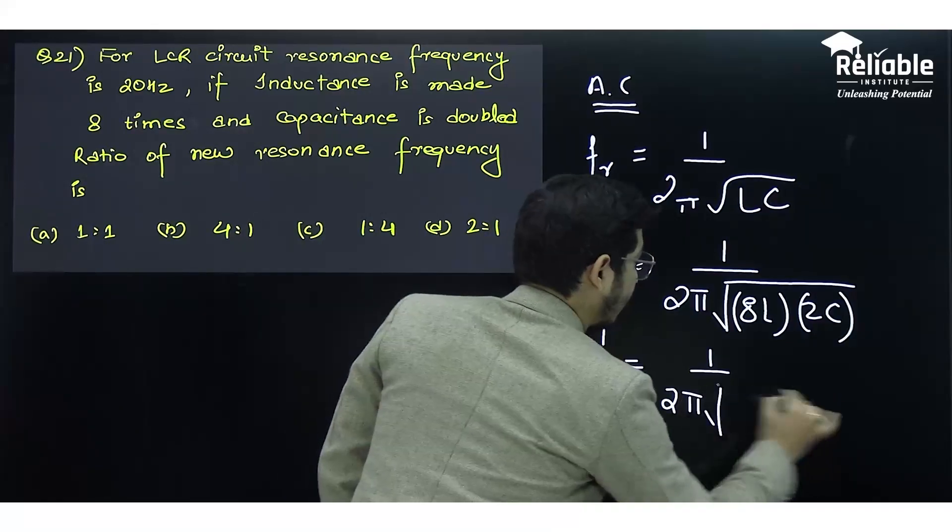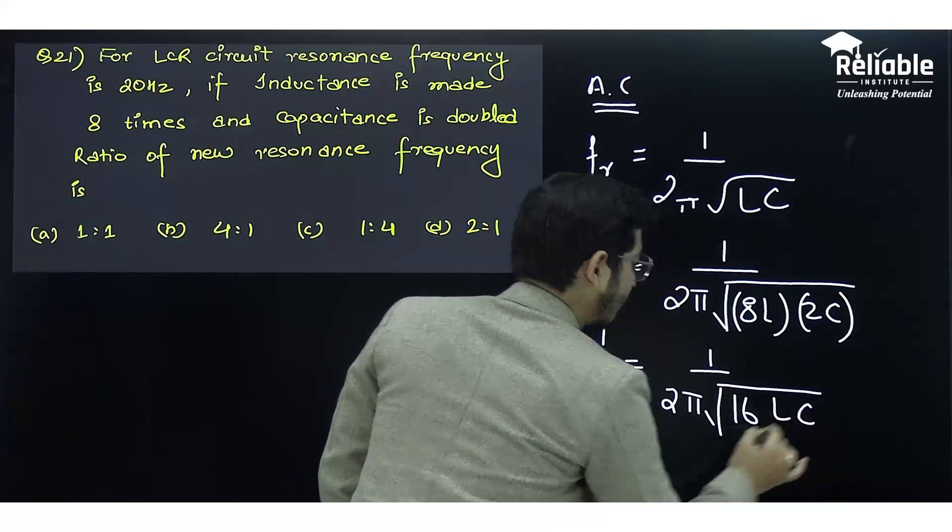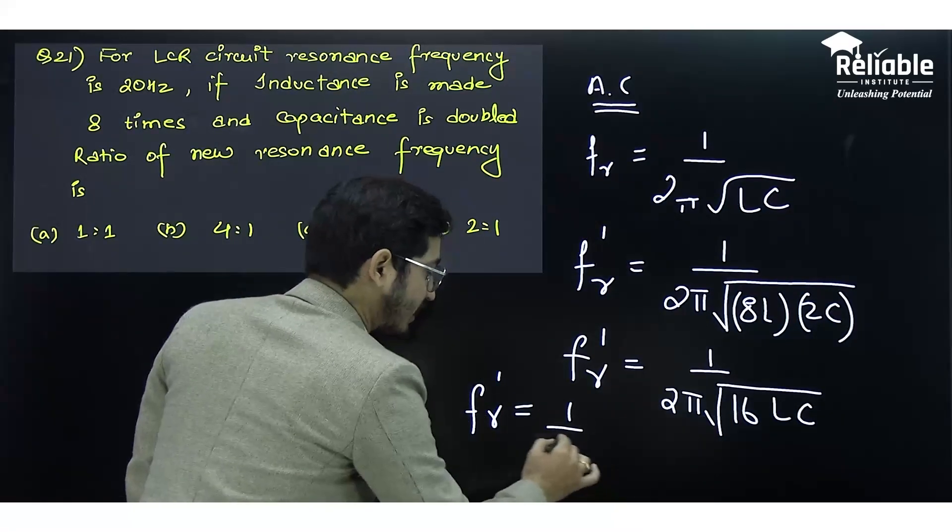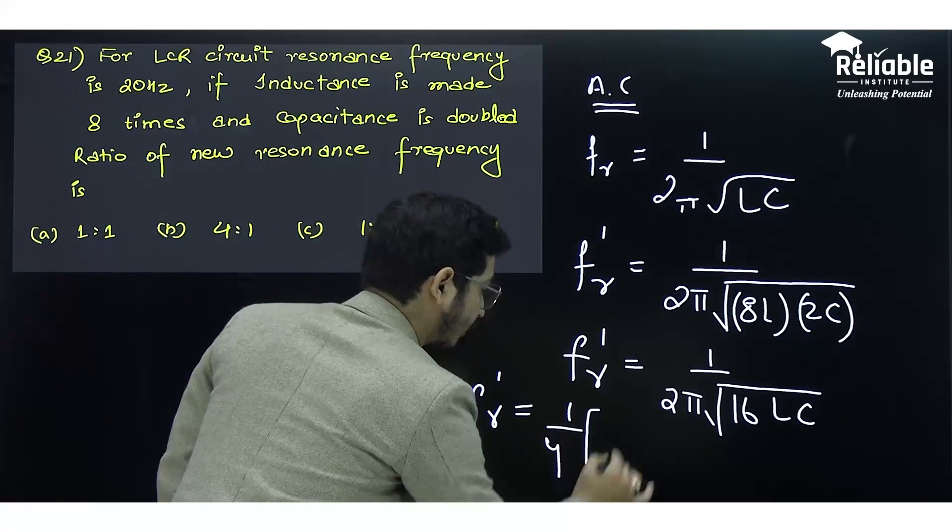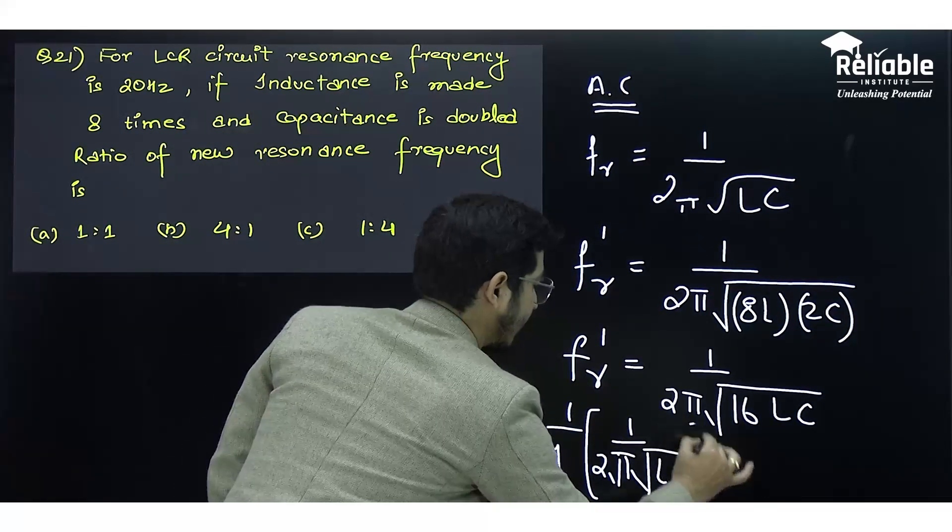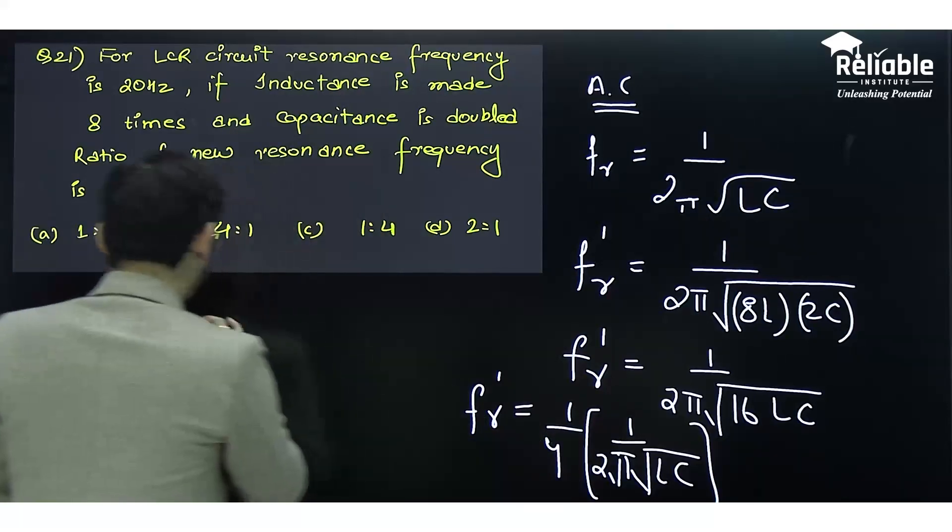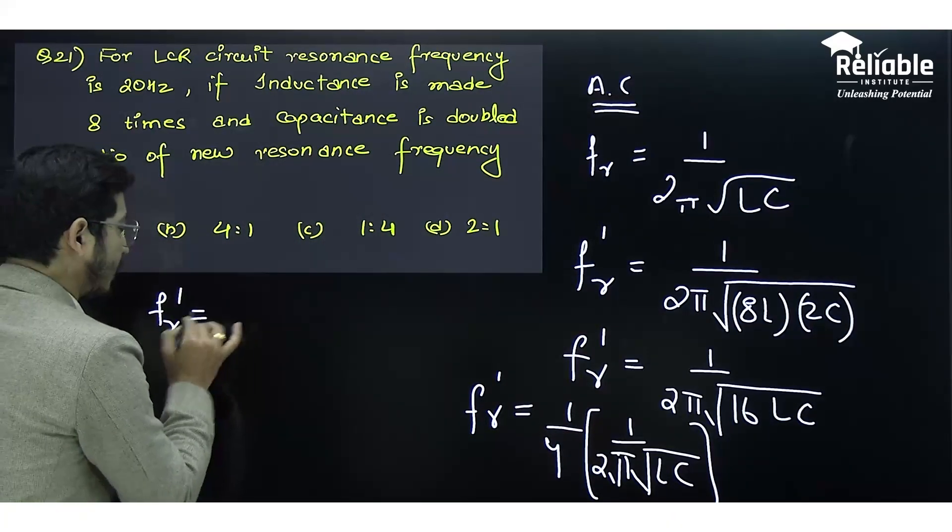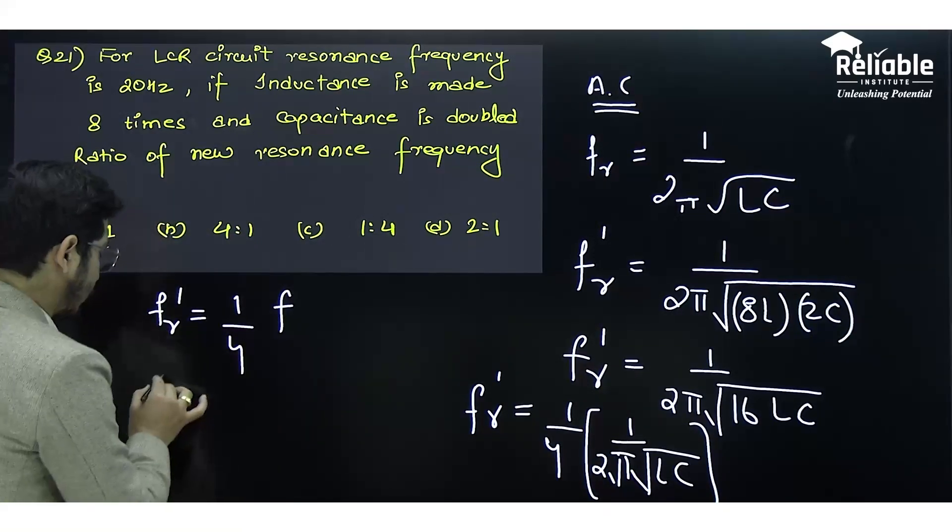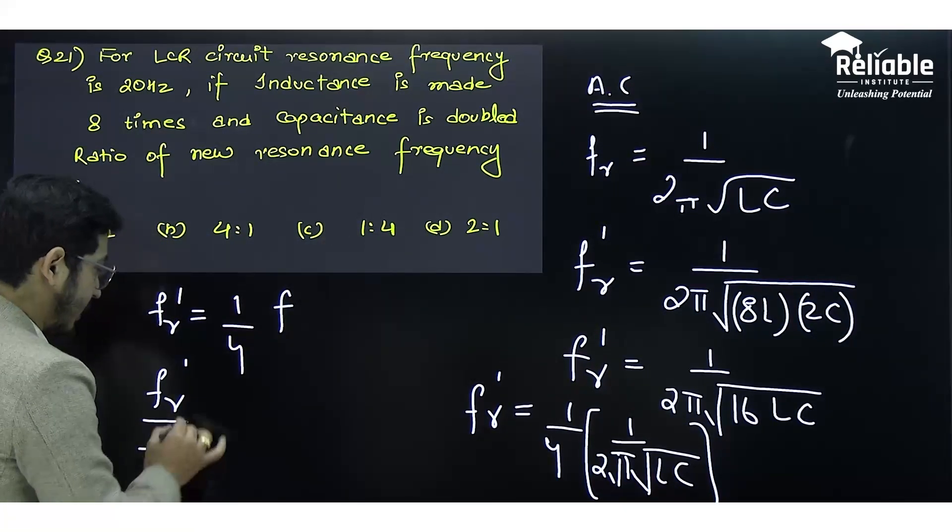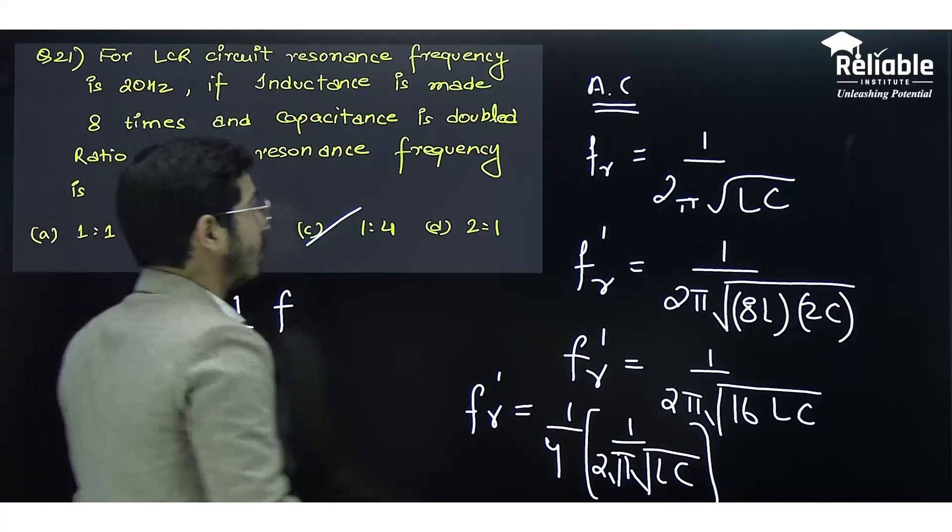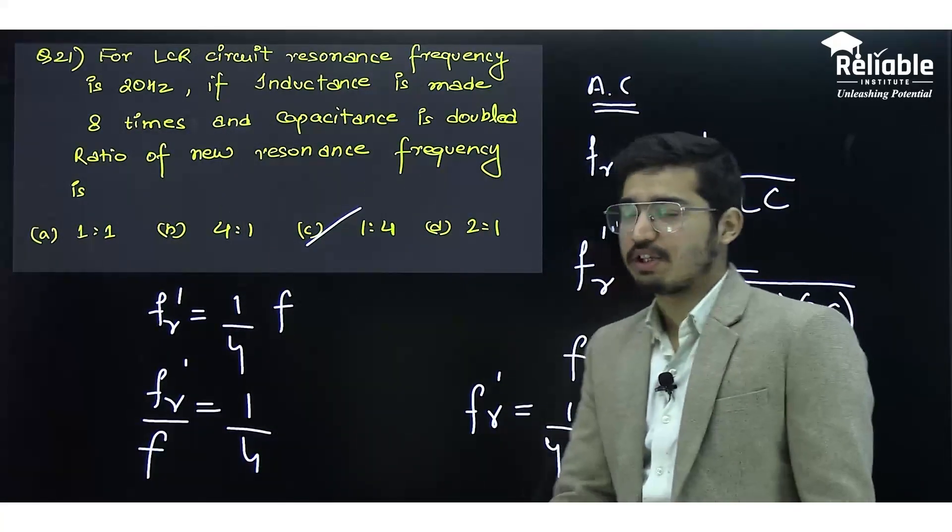The inner portion is 16 times the previous one. Taking the square root of 16 gives us 4, and this portion becomes 1/(2π√(LC)). So the new frequency f_r' is 1/4 times the earlier frequency. The ratio of new frequency to earlier frequency is 1:4, so option C is the correct answer.